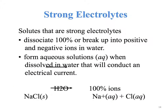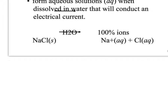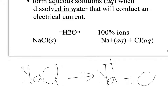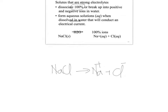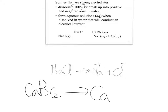Solids that are strong electrolytes dissociate 100% in water. For example, if we have sodium chloride and put it in water, it will dissociate into sodium cations and chloride anions. This is a very strong electrolyte — it will dissociate completely in water and conduct electricity. For example, calcium bromide will dissociate in water: calcium is in group 2 so its charge is 2+, and bromide is Br⁻, so we have two of those. It is a strong electrolyte — it will dissociate in water and conduct electricity.